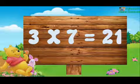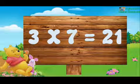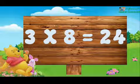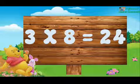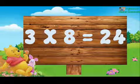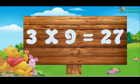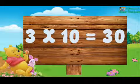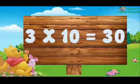3 sevens are 21. 3 eights are 24. 3 nines are 27. 3 tens are 30.